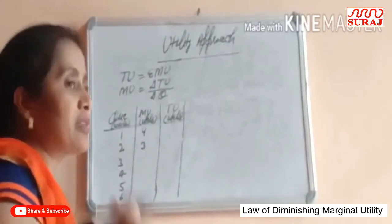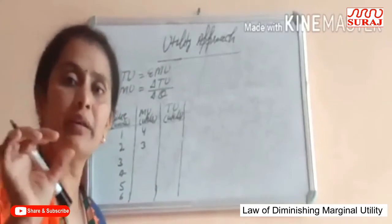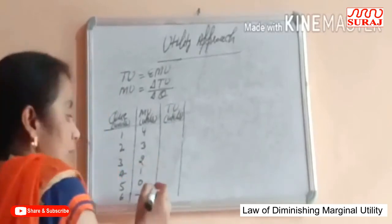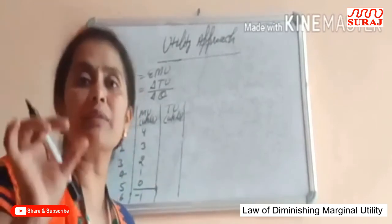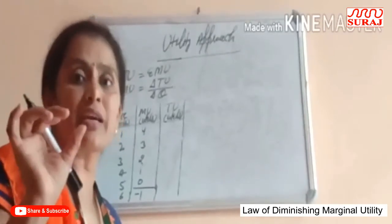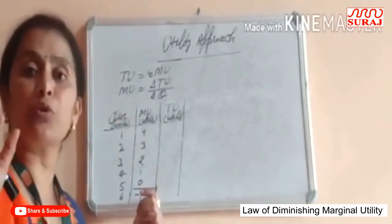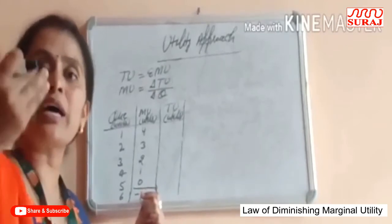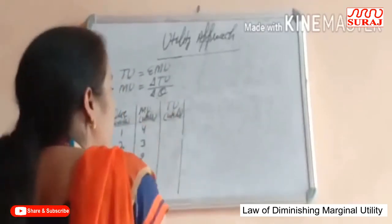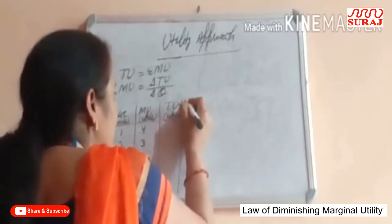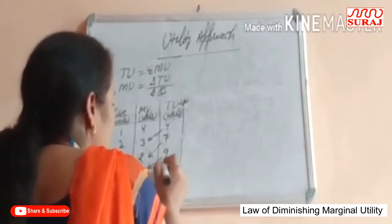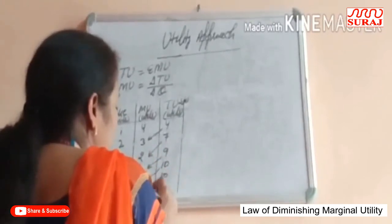When the consumer consumes the third unit, consumption decreases in comparison to the second unit. Then 2, then 1, then 0, then minus 1. Where marginal utility is 0, it shows the maximum satisfaction level of the consumer. After that, when the consumer increases consumption, the marginal utility becomes negative. Total utility is the sum: 4, 4+3=7, 7+2=9, 9+1=10, 10+0=10, 10−1=9.